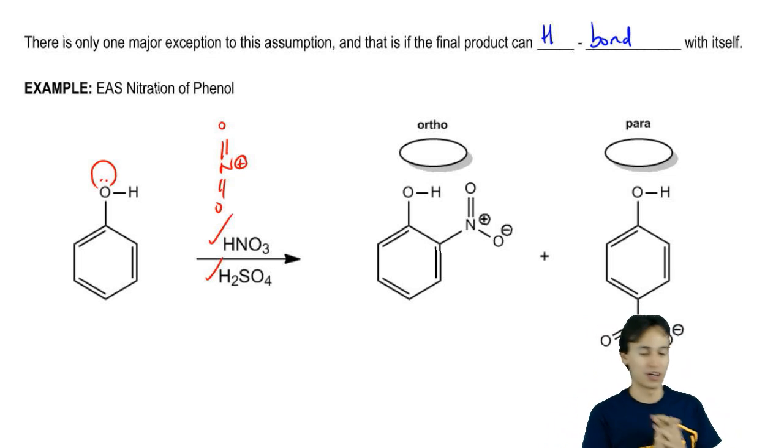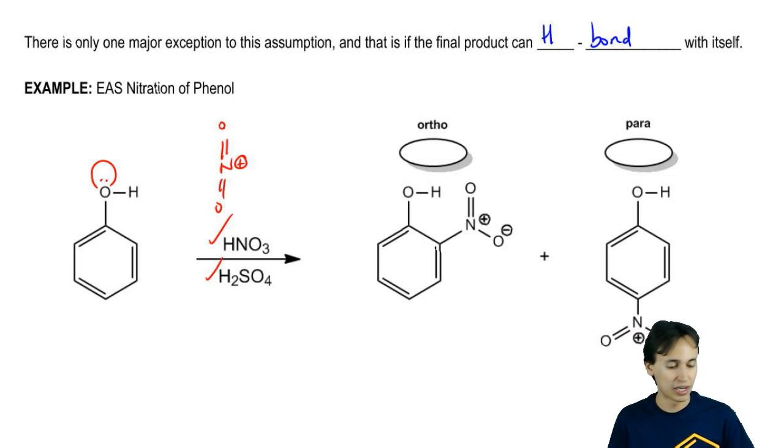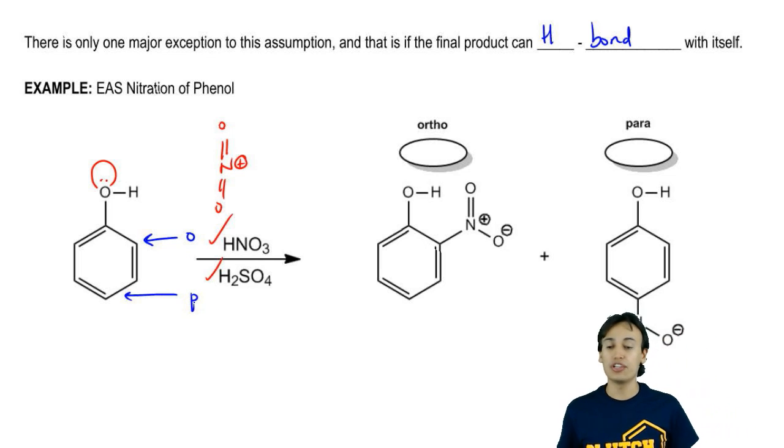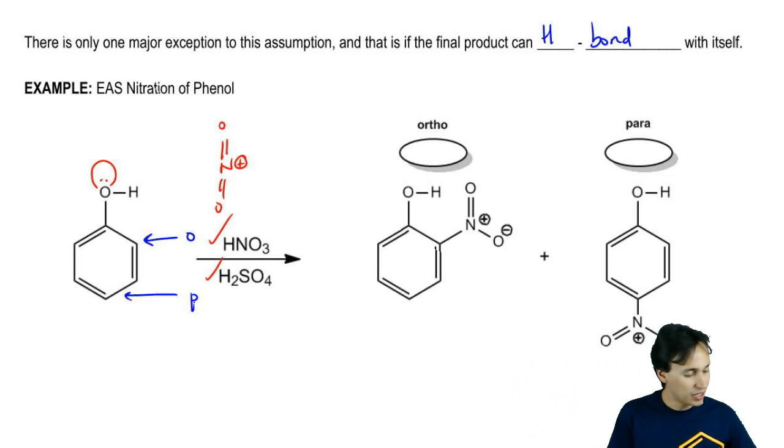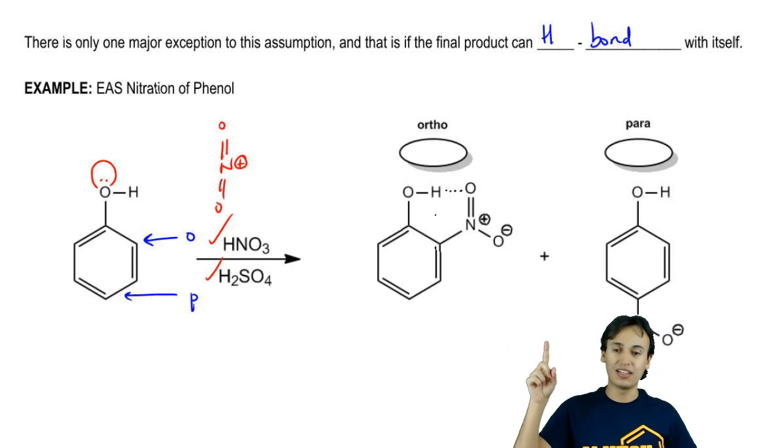I mean it has two lone pairs. You know what I'm saying? It has at least one lone pair. We know that it's going to direct either next to it which is ortho or at the bottom which is para. But it turns out that in this case ortho is slightly better. Why?